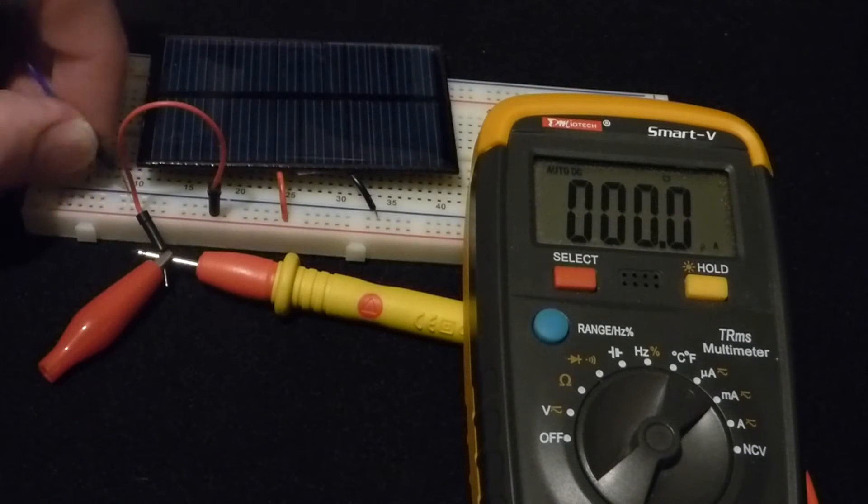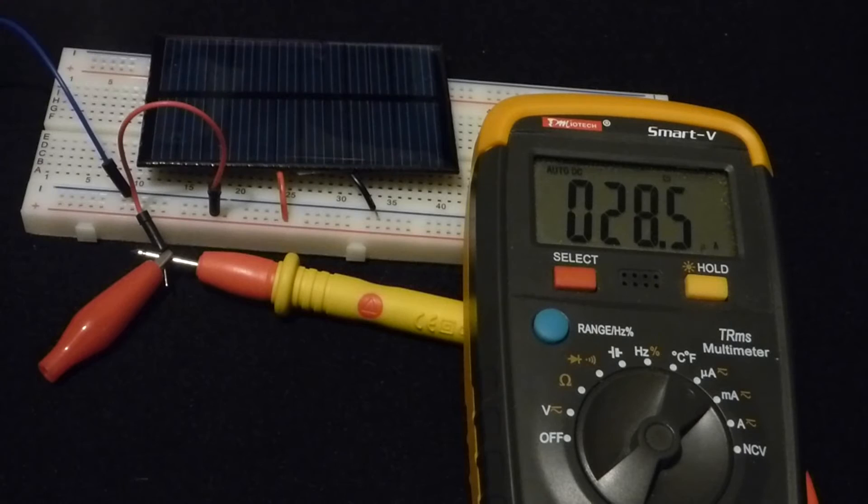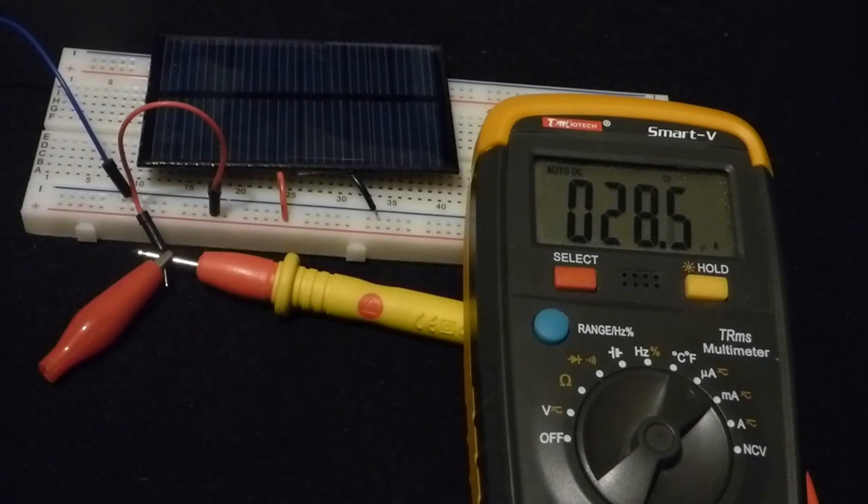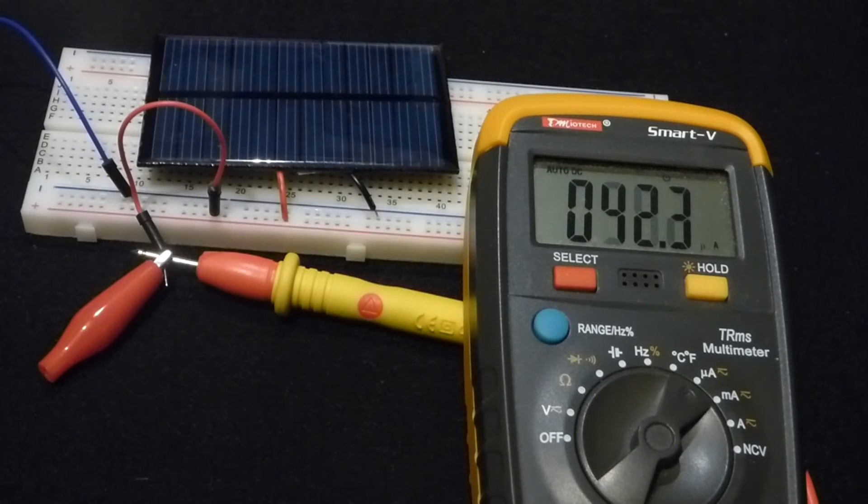But right now this panel is outputting a very small amount of current. There you can see it's only 28.5 microamps. So we would need 1,000 times this much to get 28 milliamps, which is a little bit more than what LEDs are rated to handle continuously.